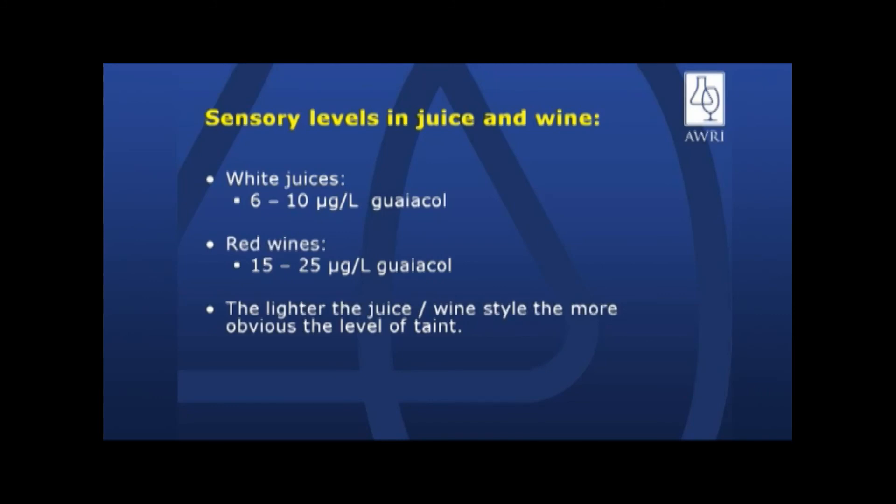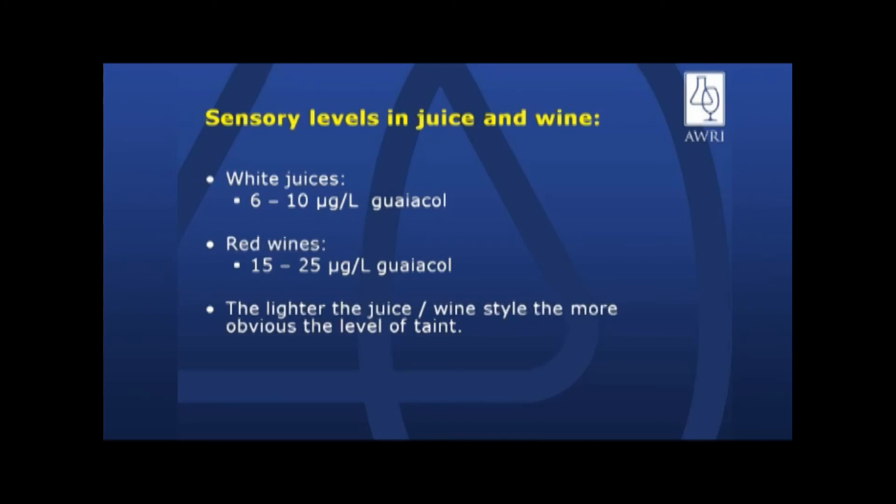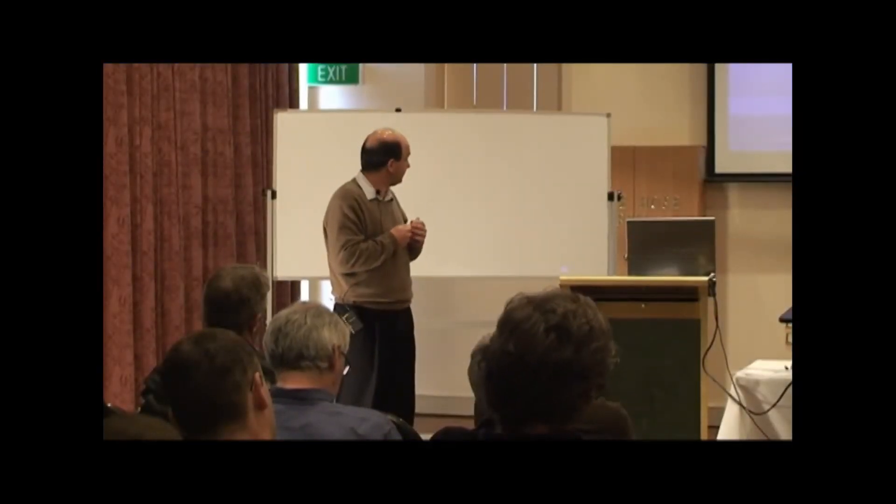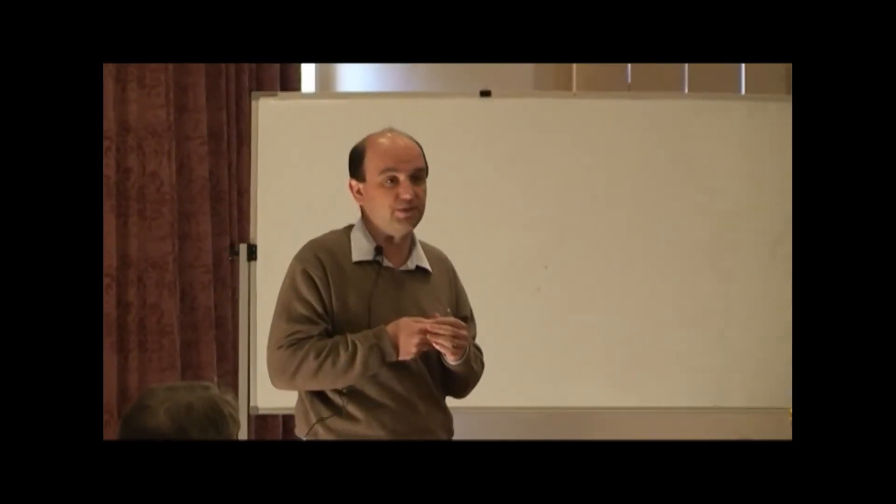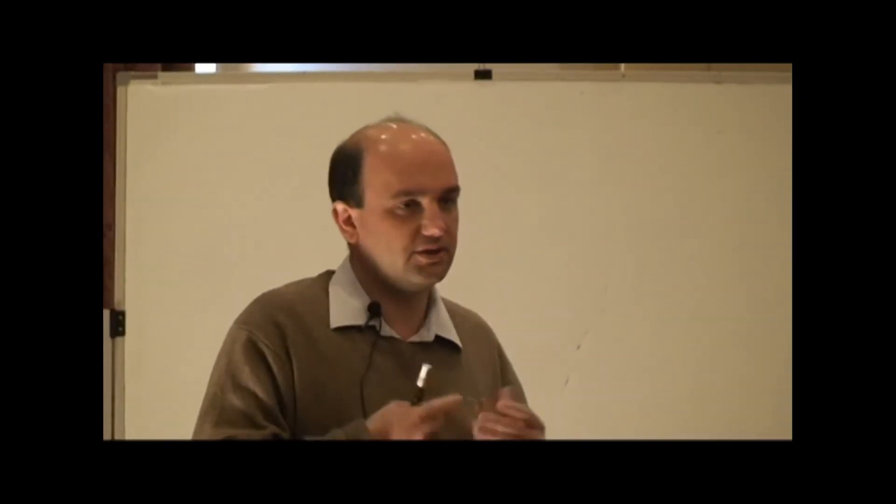For example, we had some wines from a vineyard last year where they had a Cabernet Sauvignon which had about 30 micrograms of guaiacol, and from the same vineyard they had a Shiraz which had about 40 micrograms. And the Cabernet actually looked a lot more tainted than the Shiraz. So it's really a function of the body and the structure of the wine.